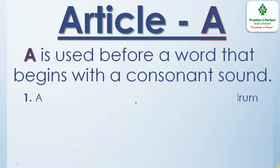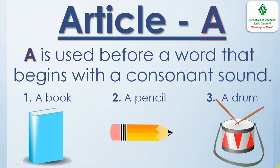Article a. A is used before a word that begins with a consonant sound. For example, a book. We use article a because the word book begins with the sound b. Similarly, pencil begins with sound ph and drum begins with the sound d. All of these are consonant sounds, so we use article a before them.